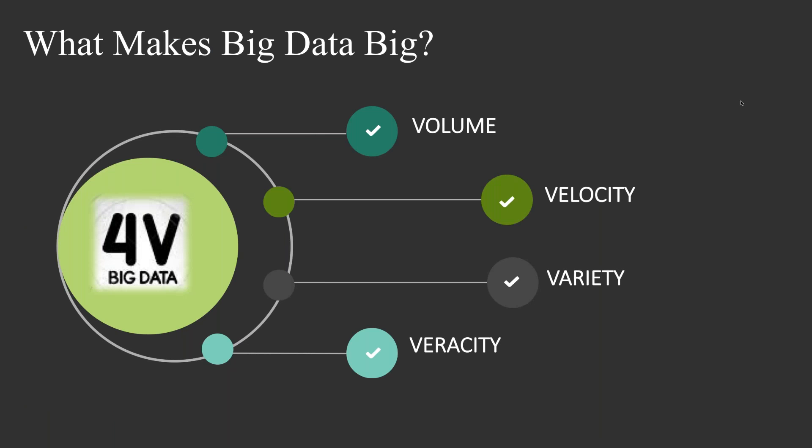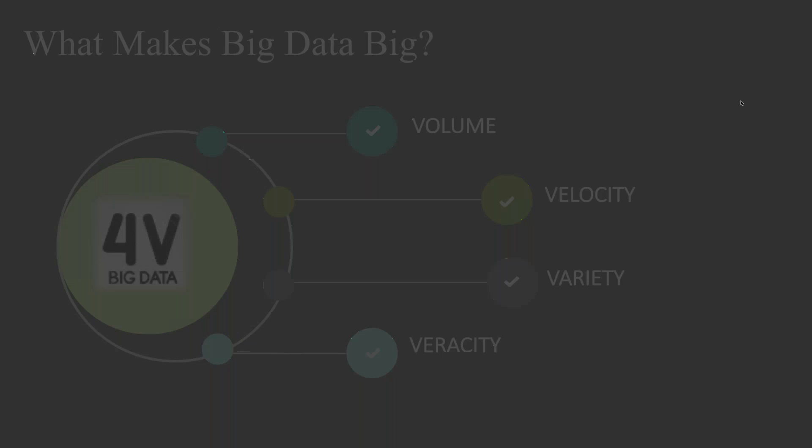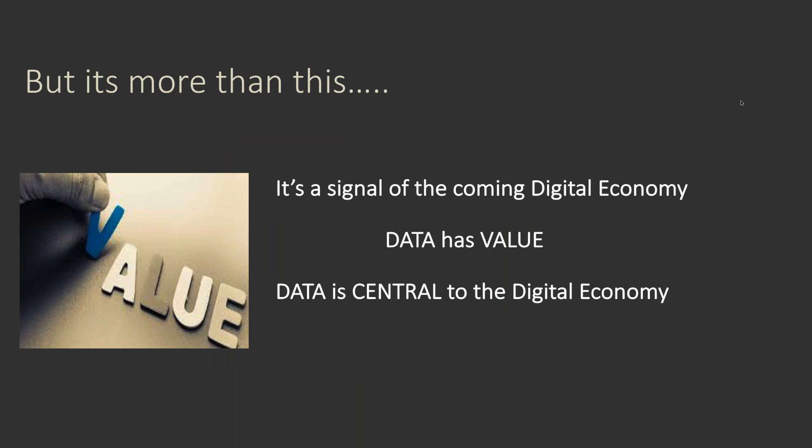This slide covers something that maybe people have seen before — the four V's related to big data: volume, the amount; velocity, the speed at which you need to process information; variety, the different data types; and veracity, the trustworthiness and cleanliness of the data. One additional V I want to focus on today is value. Data has value, and it's a signal of the coming digital economy that data is really central to that economy.